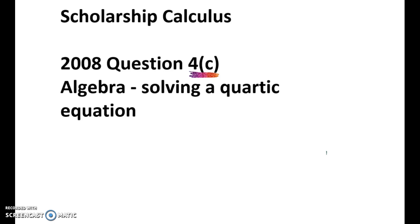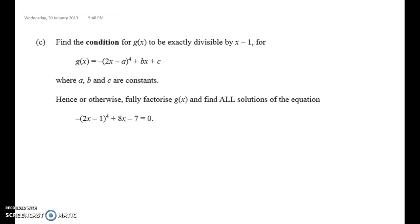So if you've done a few of these by now, you know that if it's at the end of a question, it's probably worse than if it's at the start. And it is. We have to find the condition for g(x) to be exactly divisible by x minus 1 for this function here. We're just told that a, b and c are constants and g(x) is obviously a quartic.